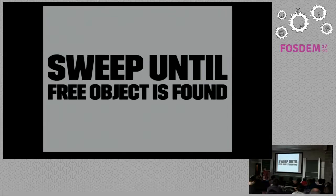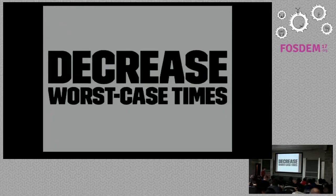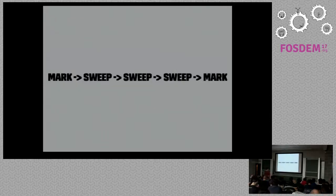We do the mark phase just like in 1.8, sweep a little immediately for whatever we needed, then go back to program execution and sweep objects into the free list only as necessary. This decreases the worst-case times — rather than one long mark followed by one very long sweep, you have one mark followed by several smaller sweeps. The worst-case GC pause time was greatly reduced: mark, sweep, sweep, sweep, then mark again.